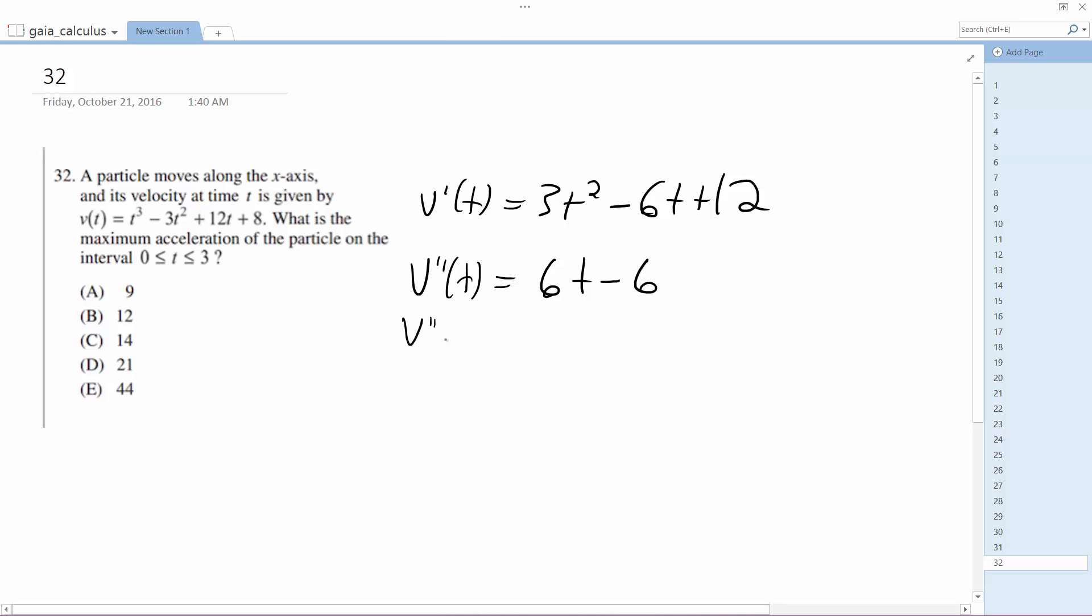So here we have 16 minus 6, and if I plug in, the only option I have here really is 3, so it's just going to be 6 times 3 minus 6, which is 18 minus 6, which is equal to 12, and that's it, so it's going to be v.